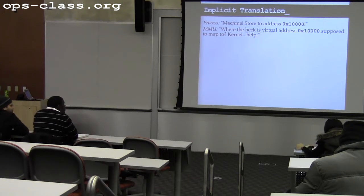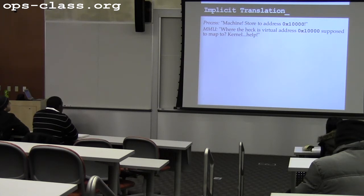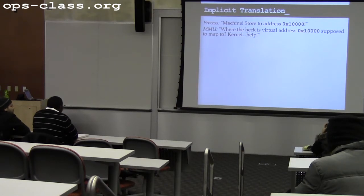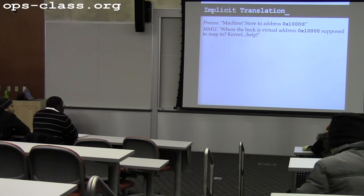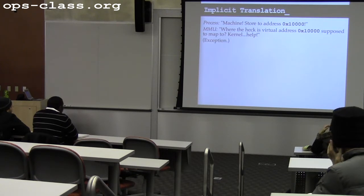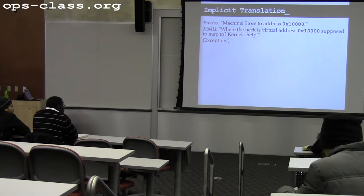Sometimes the MMU doesn't know what to do. For example, this may be the first time that this process used virtual address 0x10000, so the MMU doesn't know what to do. It says to the kernel: what am I supposed to do with this address? I have no idea where it goes, you never told me anything about this. This causes an exception. The MMU fires an exception, and we jump into kernel mode and start processing it.